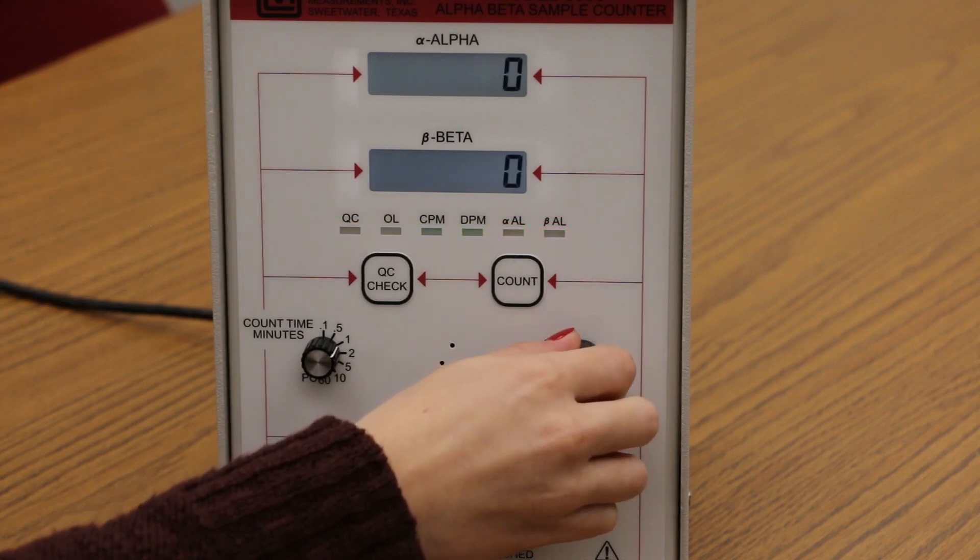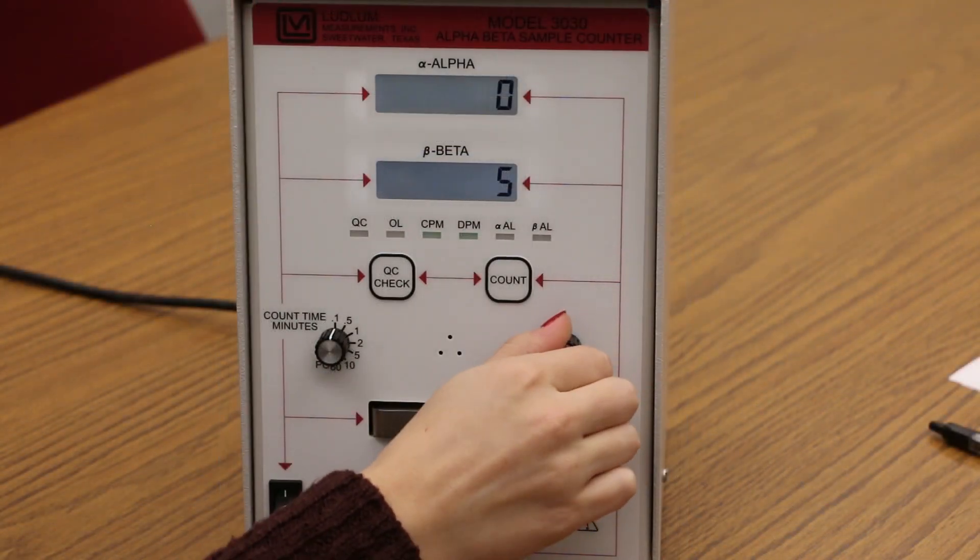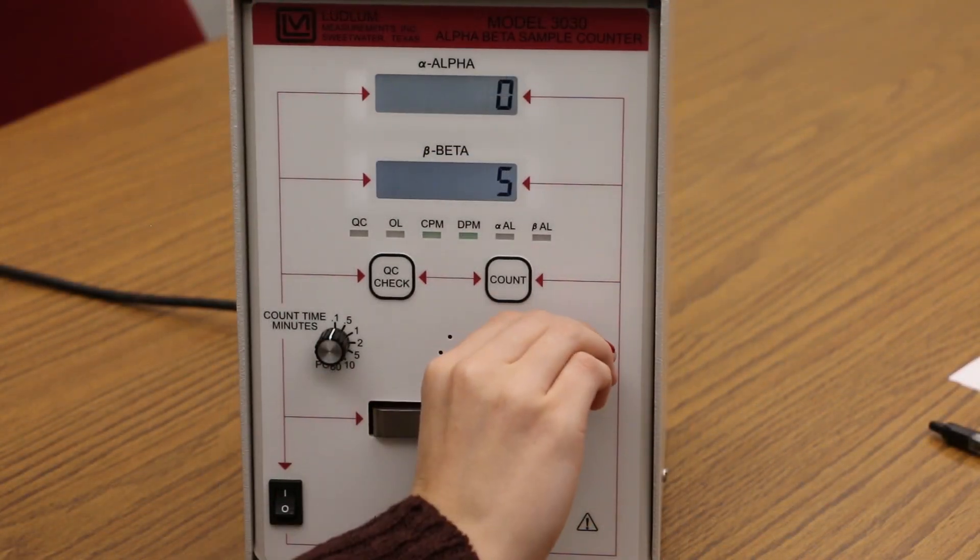Adjust the volume of the speaker to the desired level with the volume knob. The alpha and beta clicks have a different tone to help distinguish them from each other.